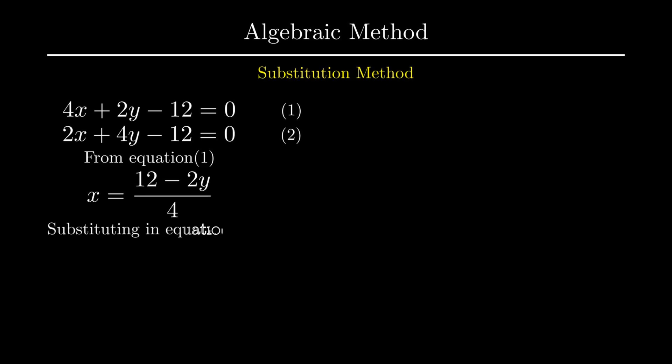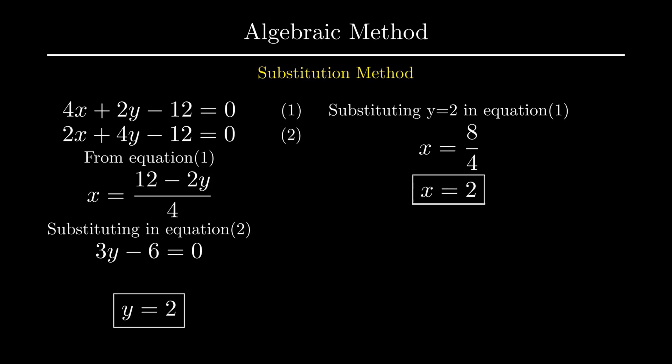On substituting variable x in equation number 2 we get 3y minus 6 equal to 0 which on further simplification gives us y equal to 2. Now put y as 2 in any of the equations. For now let us substitute it in equation number 1. On simplifying by the rules of transposing x is obtained as 2. Thus x equal to 2 and y equal to 2 is the only solution of the given pair of linear equations.